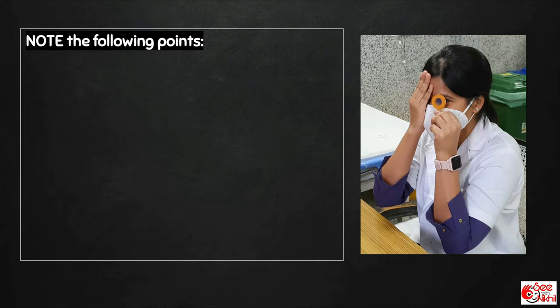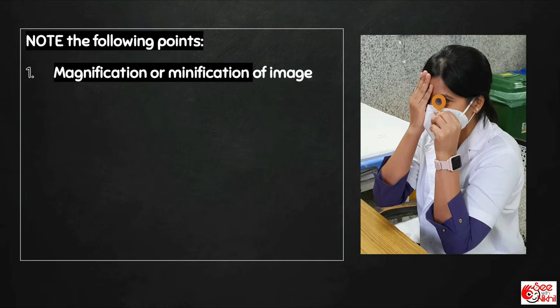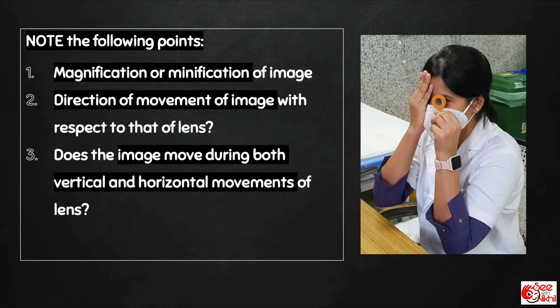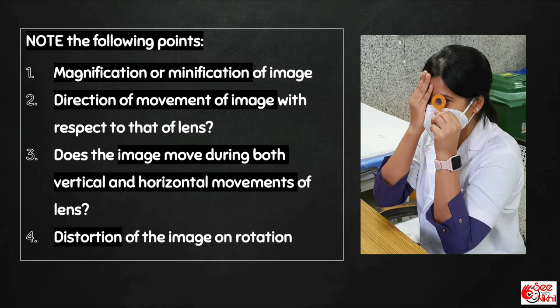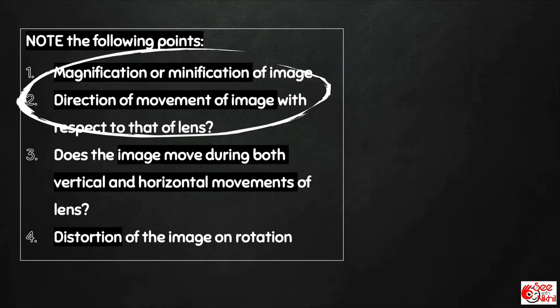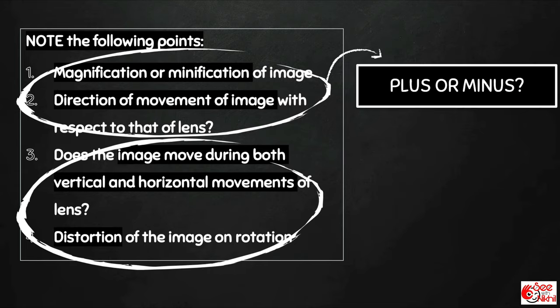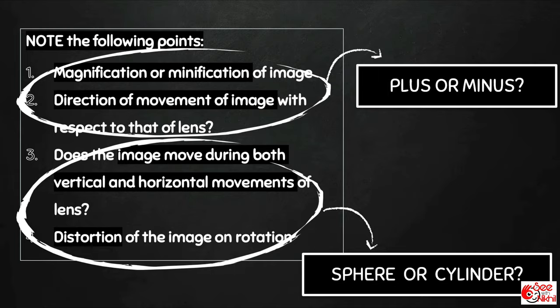Then move the lens in vertical and horizontal directions and then rotate the lens. Note the following points: Is there any magnification or minification of image? What is the direction of movement of the image with respect to that of the lens? Does the image move during both vertical and horizontal movements or only during one of them? And is there any distortion on rotation? The first two points will tell us if it's a plus or minus lens, and the next two will tell us if it's a sphere or cylinder.